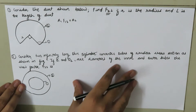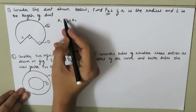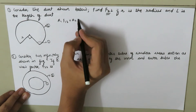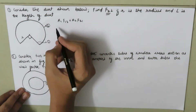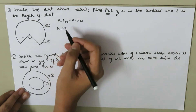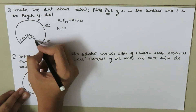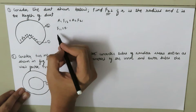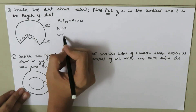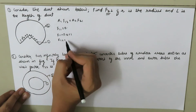We are going to make use of the reciprocity theorem. According to it, A₁ × F₁₂ equals A₂ × F₂₁. We know that F₁₁ equals 0 because the radiation emitted by surface 1 will not fall on surface 1 itself. According to the summation rule, F₁₁ + F₁₂ = 1, so since F₁₁ = 0, F₁₂ equals 1.